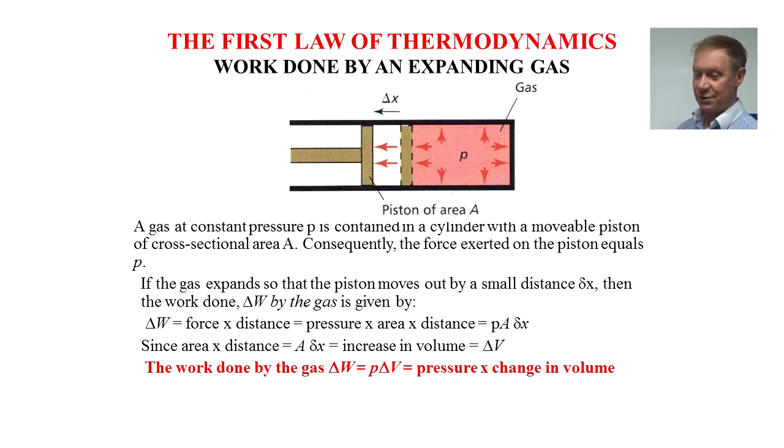If the gas expands so that the piston moves out by a small distance delta X, then the work done delta W by the gas is given by delta W equals force times distance, which is pressure times area times distance, PA delta X. Since area times distance A delta X equals increase in volume delta V, the work done by the gas delta W equals P delta V, which is pressure times change in volume.